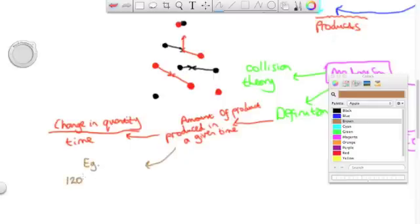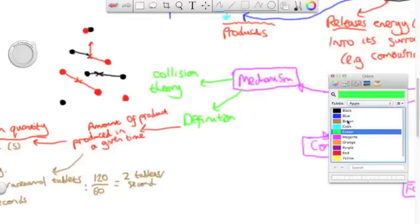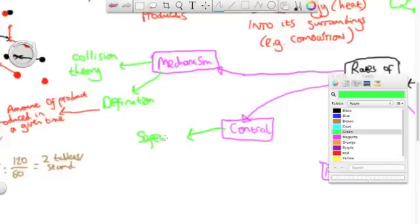We say that the rate of reaction is equal to the change in quantity of a product over time. For example, if you have 120 paracetamol pills that you've made, and you took 60 seconds to make it, well if you divide 120 by 60, you get 2 paracetamol tablets per second, and that will be the rate of that particular reaction.